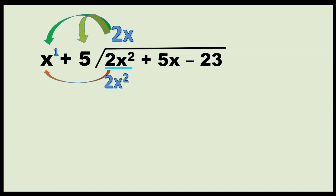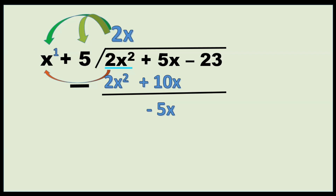Next, 2x times 5 is 10x. The next step is to subtract: 2x squared minus 2x squared is 0. Then 5x minus positive 10x — in this step, we're going to change the sign of the subtrahend. The subtrahend here is positive 10x, so we change the sign: positive becomes negative. Therefore, 5x, if positive 10 becomes negative 10, it becomes negative 5x.